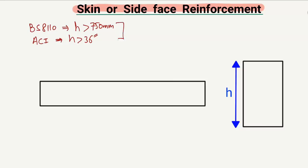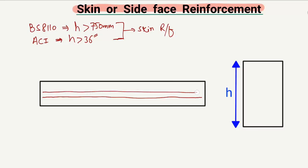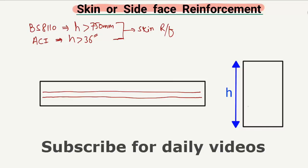In these two cases — according to the British and the ACI codes — we have to provide the skin or side face reinforcement. I consider here a beam and here is the cross section of the beam. The skin reinforcement is provided here in the middle of the beam, for example at this location or at this location.